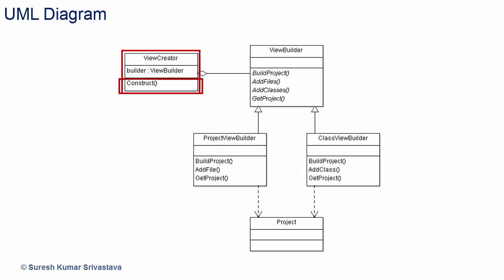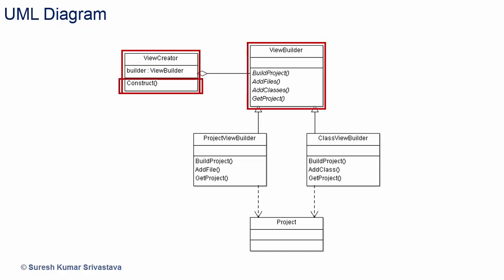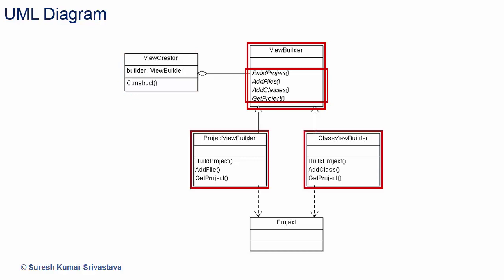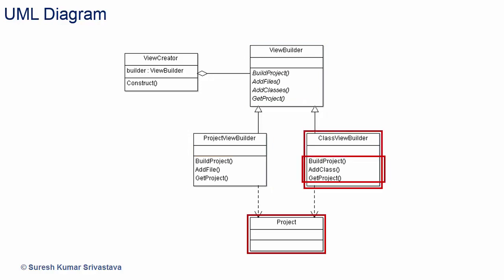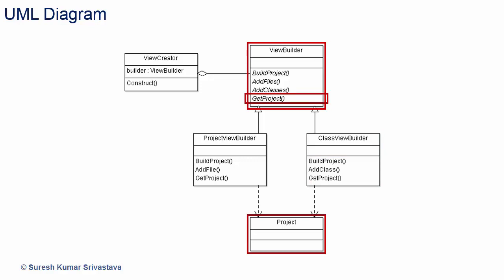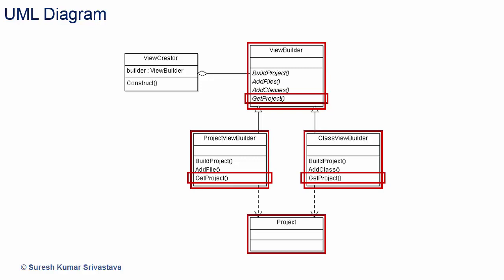I have created a UML diagram for this. The class view creator has logic for construction of project and has an instance of view builder. It gets the information of parts of the project, then requests the view builder to build the parts of project. View builder has interfaces for building the parts of project and assembling it. Project view builder and class view builder are derived classes and implement the interfaces of view builder for different representations of project. View builder also provides the interface to get the project object, implemented by both concrete builders.